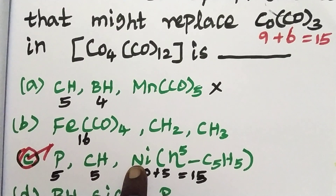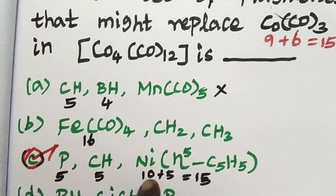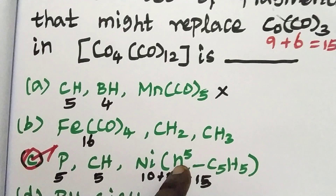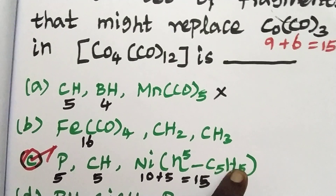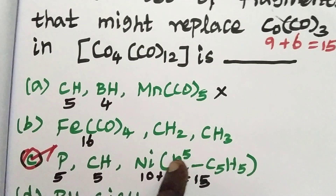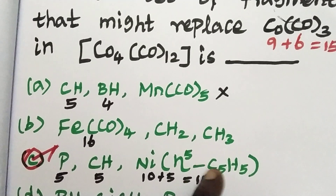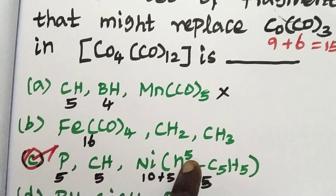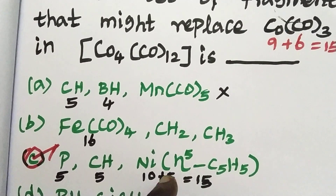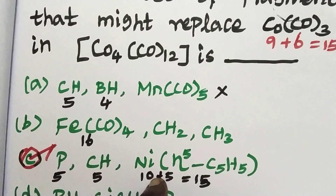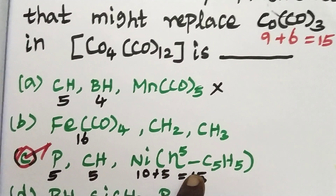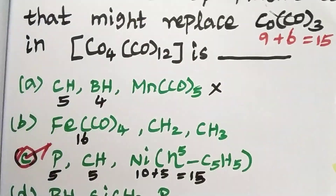Nickel is atomic number 28, configuration D8, S2 — 10 electrons. The Eta5-cyclopentadienyl ligand (Cp) has 5 carbons and donates 5 electrons. So 10 plus 5 equals 15 electrons. With 1 carbonyl giving 1 electron: 5 plus 5 plus 5 equals 15. That is the correct answer.